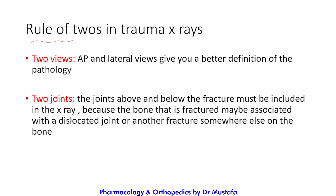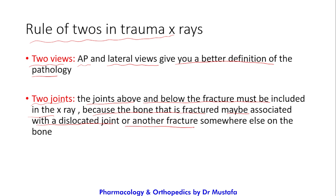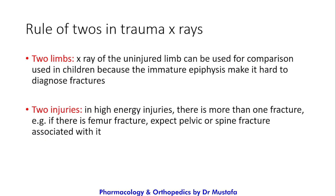Now let's talk about the rule of twos in trauma X-ray. First, take two views: an AP (anteroposterior) view and a lateral view, which gives a better definition of the pathology. Second, include two joints in the X-ray — the joint above and the joint below the fracture — because the fractured bone may be associated with a dislocated joint or another fracture elsewhere on the bone.